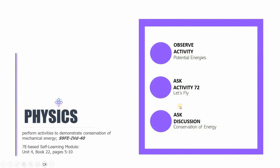This session of Physics 9 is done. We covered the following parts: under Observe, a simple activity on the different potential energies where we shed new light on them; under Ask, Activity Number 72 titled 'Let's Fly'; and a discussion about the conservation of energy. In this session we were targeting the competency of performing activities that demonstrate conservation of mechanical energy. You will find these parts in Unit 4, Book Number 22, pages 5 to 10. This is Sir CJ — I hope to see you in the next video lesson. Have a great day.